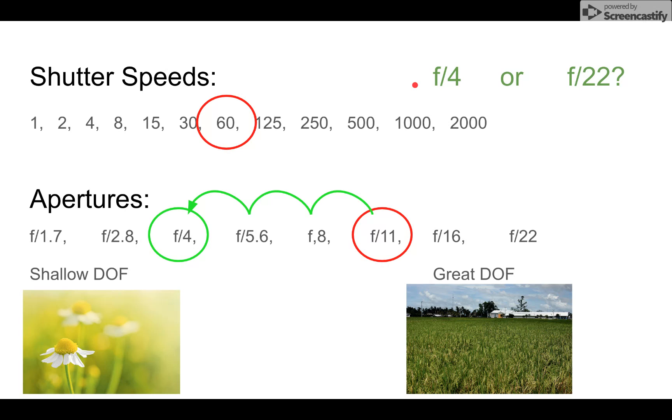So we choose F4, which means we move three stops, 1, 2, 3, in order to circle F4 over here.